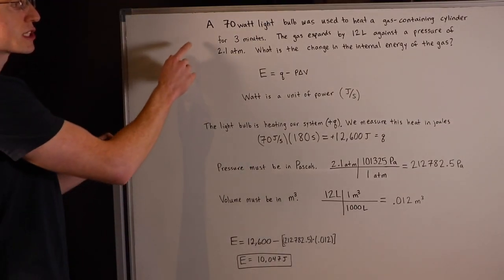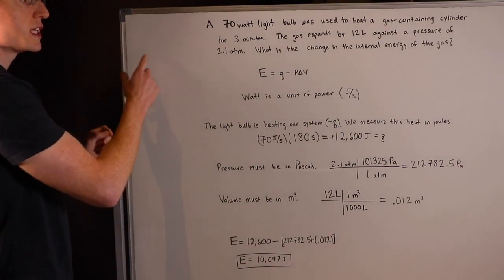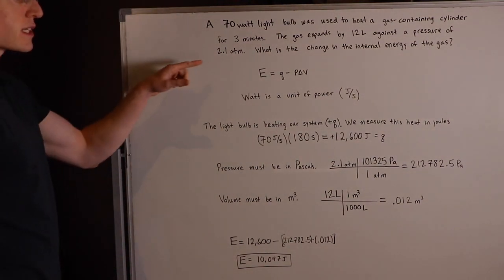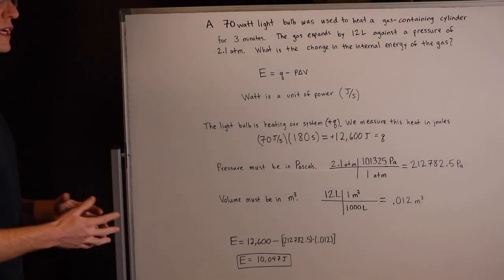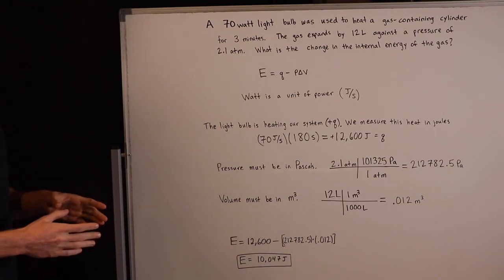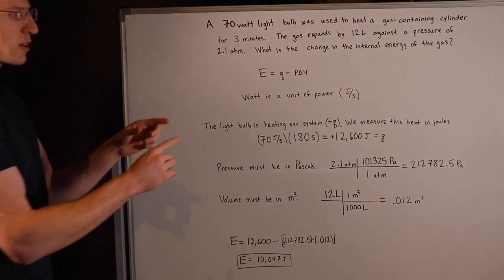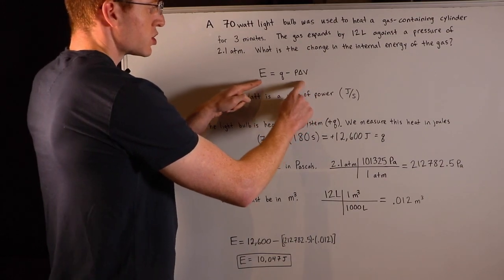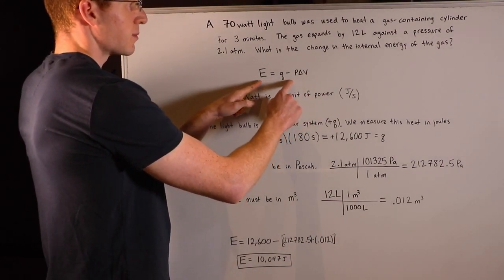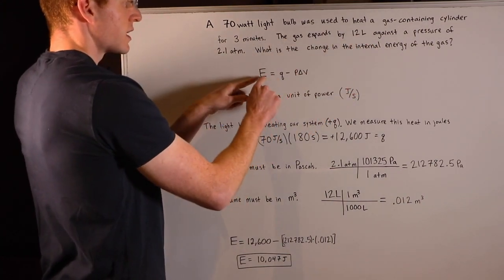Okay, so this problem says a 70 watt light bulb was used to heat a gas containing cylinder for three minutes. The gas expands by 12 liters against a pressure of 2.1 atmospheres. What is the change in the internal energy of the gas? So I've written that useful equation that I just showed you up here at the top, because this is what we're going to have to use here. They ask about internal energy, that's E.